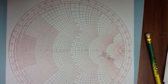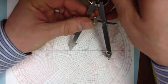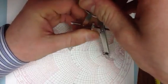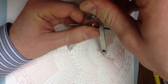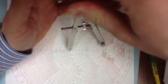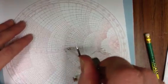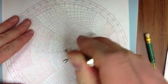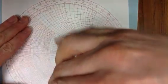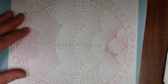Now we draw the VSWR circle. So I can do that. Trying to make it really dark so you can actually see it. So there's my VSWR circle.